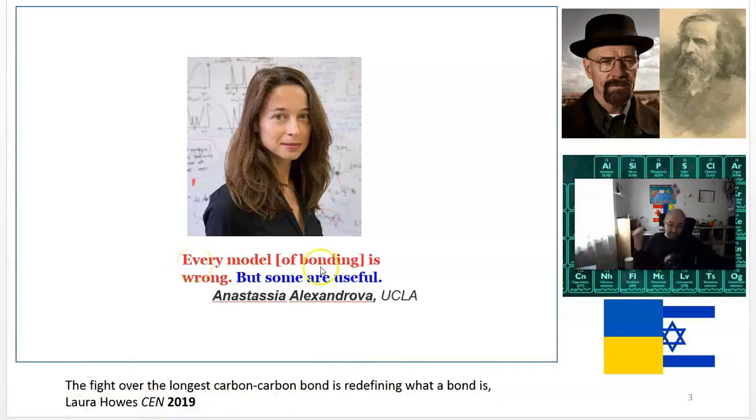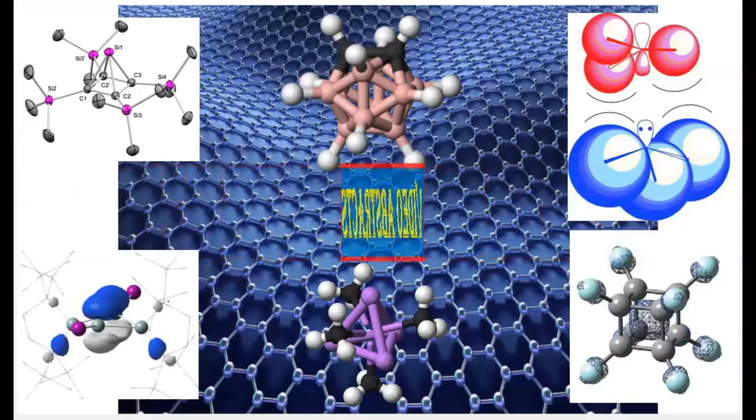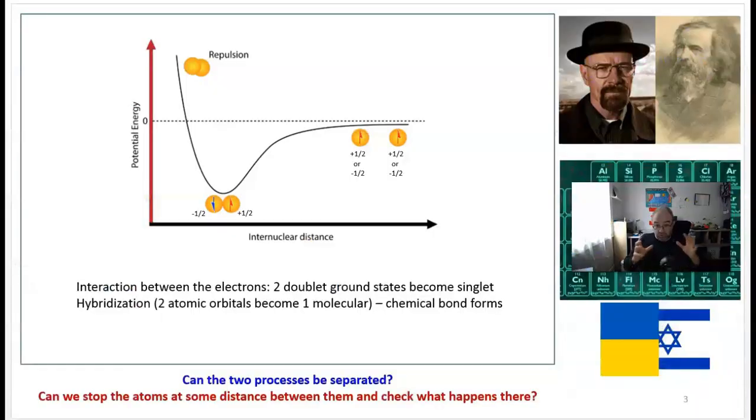She says the following phrase: every model of chemical bonding is wrong. The basic thing in chemistry—chemical bond—one would think that's something we really understand well, but we actually don't. I want to warn you, this video will have some speculations, maybe some things you may disagree with.